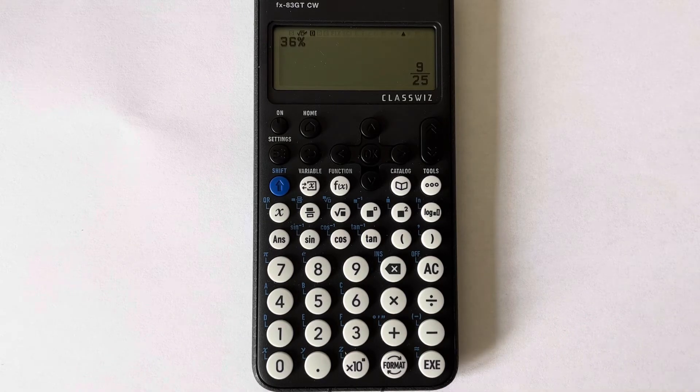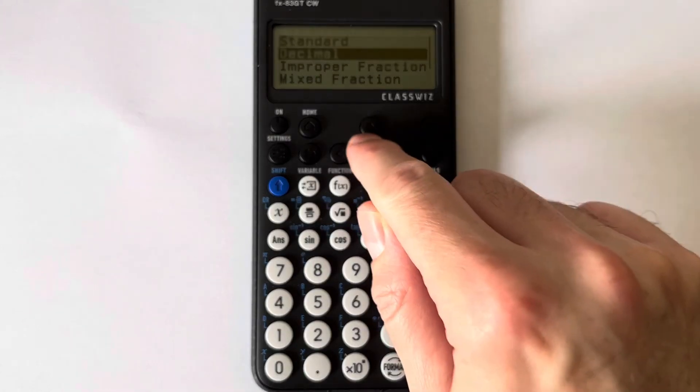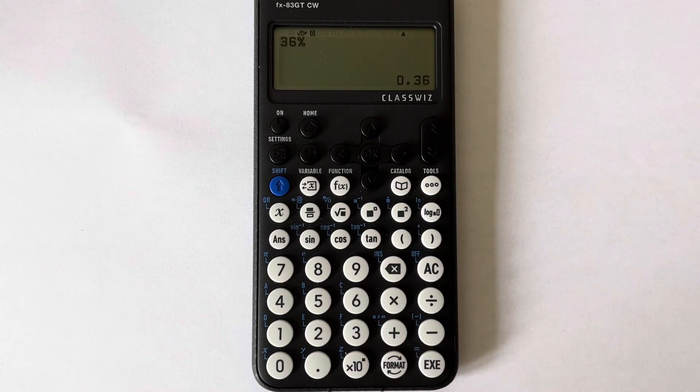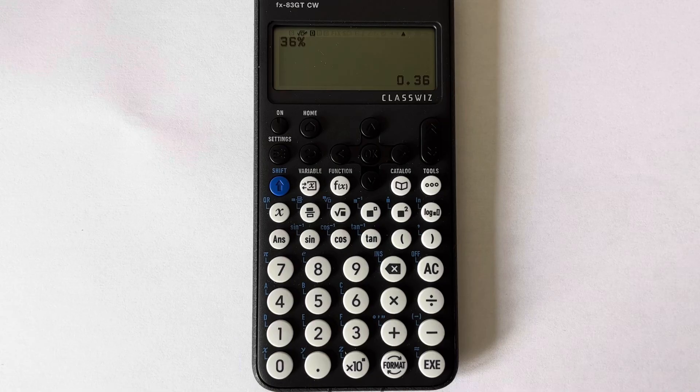If you want it as a decimal, press format and then decimal, and you get the answer 0.36. So I hope you liked today's video. If you did, like and subscribe, and I'll see you soon with some more videos. Bye bye.